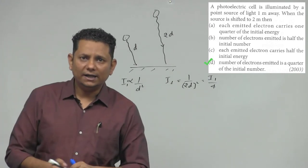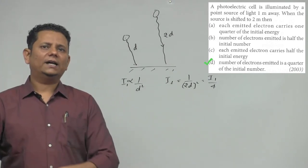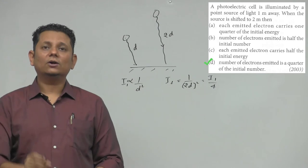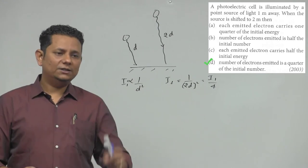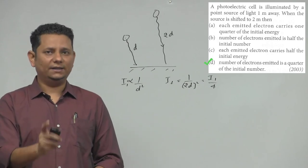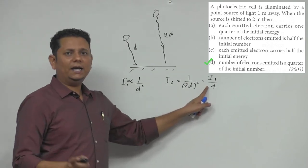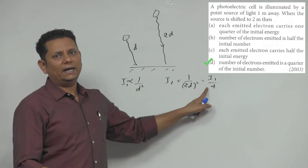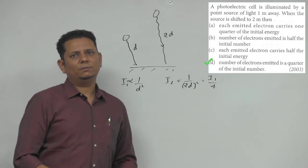The maximum current will also be one-fold. And the maximum energy will be the same. So the intensity, number of electrons, current, and energy will not be the same.